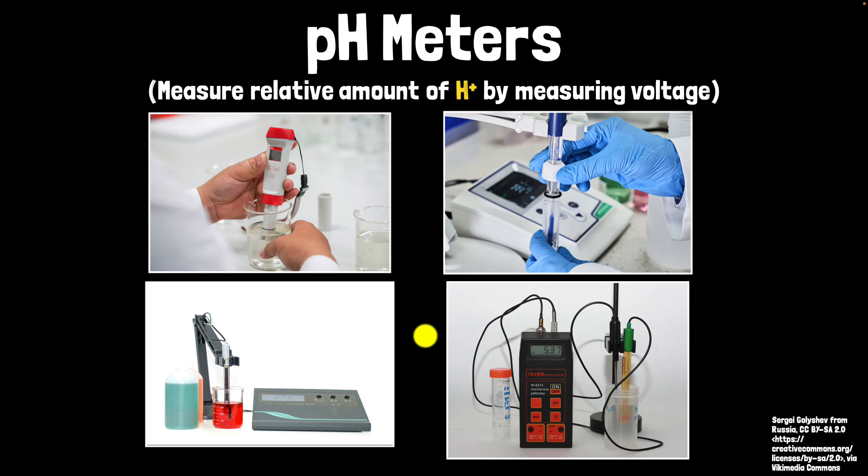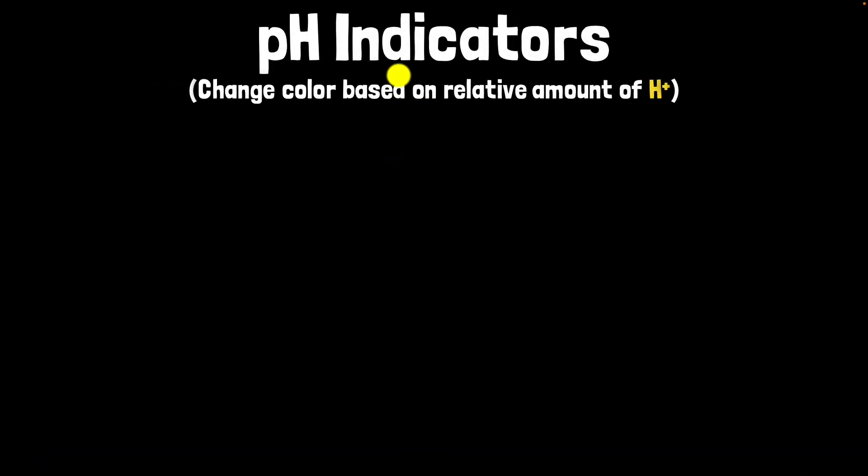So in our labs, we tend to use something else, which we call pH indicators. Indicators change color based on again, the relative amount of H plus or the concentration of H plus that's there in a solution.